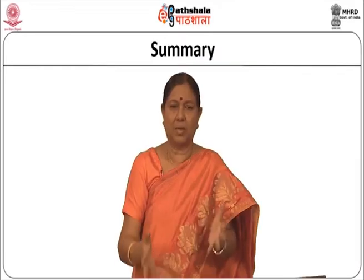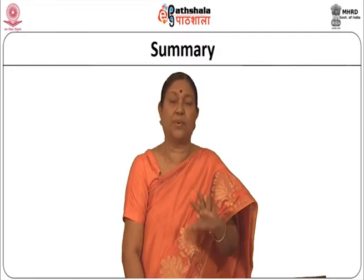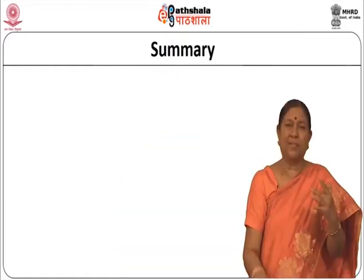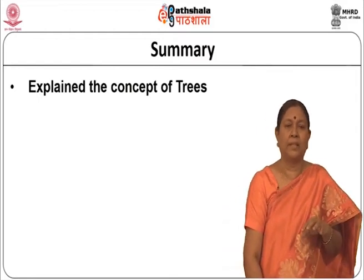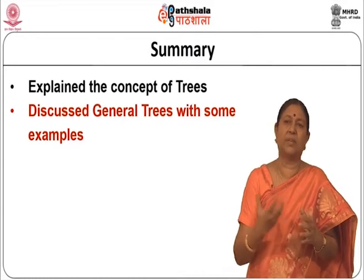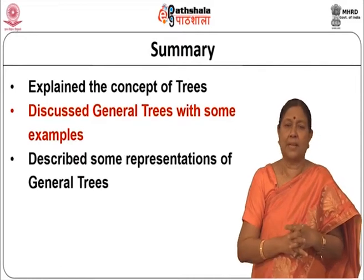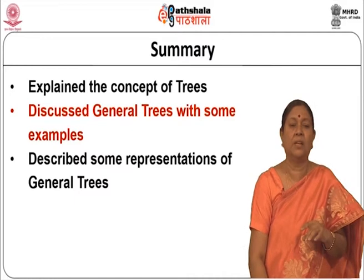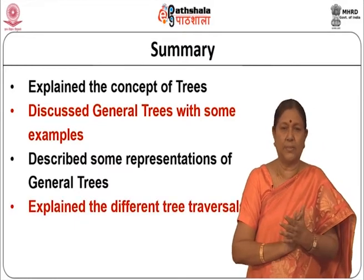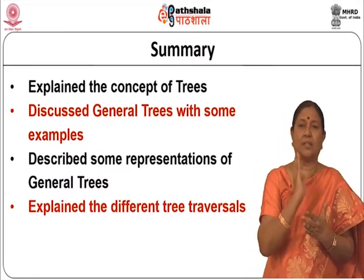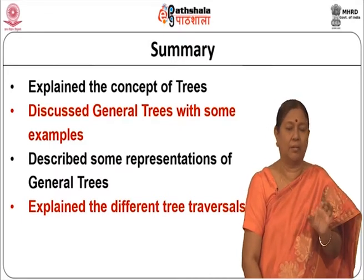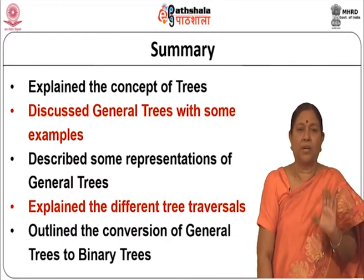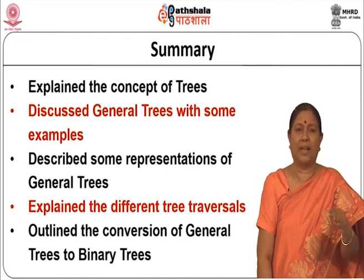The summary of this module: we did not talk about binary trees - we are going to talk about binary trees in detail in the next two modules. Here we spoke only about general trees. We explained the concept of trees in terms of terminology. We discussed general trees with examples, using a file system to explain. We described representations of general trees: array representation, parent node representation, and left child right sibling representation. We explained different tree traversals using recursive algorithms, and we outlined the conversion of general trees to binary trees. In the next module, we will be talking about binary trees in detail.